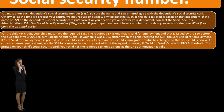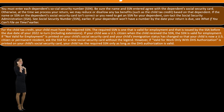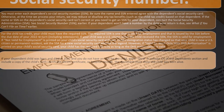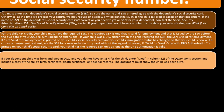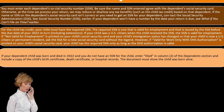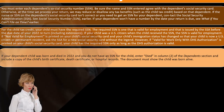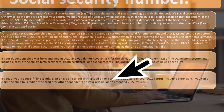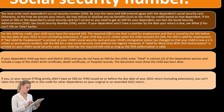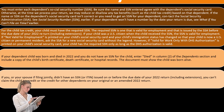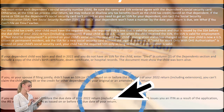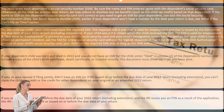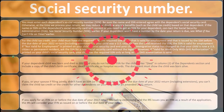For the child tax credit, your child must have the required Social Security number — one that is valid for employment and issued by the SSA. If your dependent child was born or died in 2022 and you don't have a Social Security number, enter 'died' in column two of the dependent section and include a copy of the child's birth certificate. If you or your spouse didn't have a Social Security number or ITIN issued on or before the due date of your 2022 return including extensions, you can't claim the child tax credit or credit for other dependents on your original or amended 2022 return.